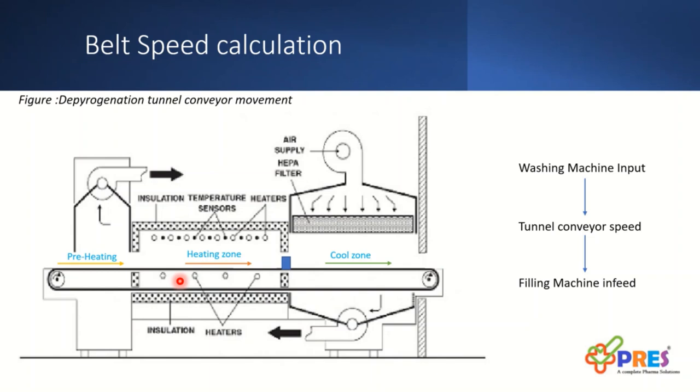The filling output is defined. If the tunnel is not supporting the higher productivity, there will be no use of high speed filling machine. So having a greater output from the tunnel with optimizable speed is one of the important aspects of sterile filling operations.